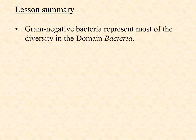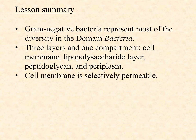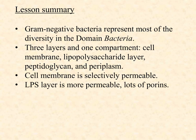So let's summarize what we just saw. Gram-negatives represent most of the diversity found in the domain Bacteria, and pretty much any branch that is not distinctly gram-positive is going to be gram-negative. Unlike the gram-positives, there are more layers in the gram-negatives — three distinct physical layers, and two of those layers create a compartment. You've got a cell membrane and the LPS layer; they create the periplasm, and then the peptidoglycan resides within that periplasm. The cell membrane is selectively permeable; the LPS layer is more permeable with lots of porins and is a bit leaky, though it makes gram-negatives more resistant to various chemical attacks than gram-positives.